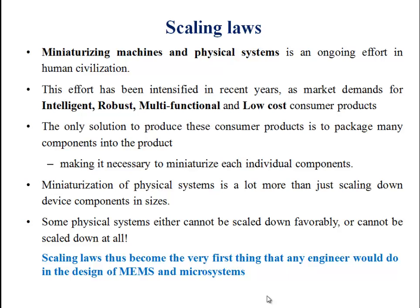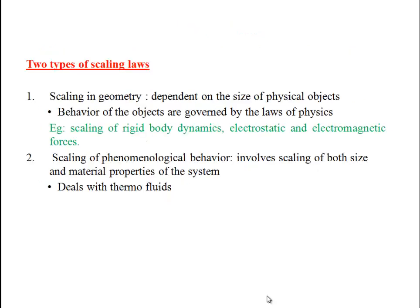But miniaturization is not just scaling down the devices into a smaller size, because there are systems that we can't simply scale. There are two types of scaling laws. The first one is scaling in geometry, which mainly depends on the size of physical objects, and the behavior of objects is governed by laws of physics — for example, scaling of rigid body dynamics, electrostatic and electromagnetic forces. The second one is scaling of phenomenological behavior, which involves scaling of both size and material properties of the system, and mainly deals with thermofluids.